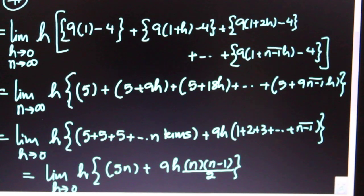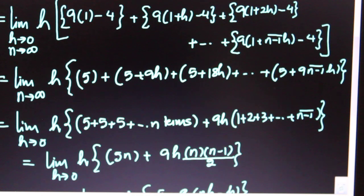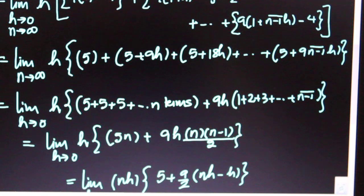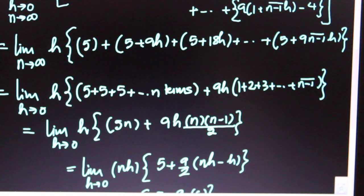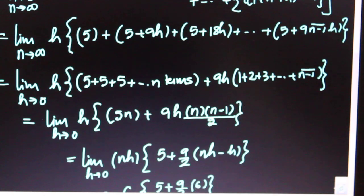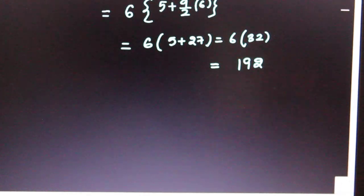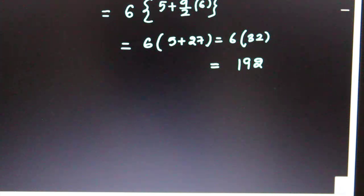People often get confused about what happens to the two factors in the second term. One n goes outside, and the remaining h multiplies with (n-1), giving nh - h. Since h tends to zero, only nh = 6 remains. The final answer is 192 — that is 6 times 32. Good luck students, all the very best!